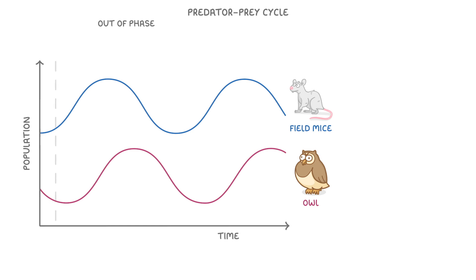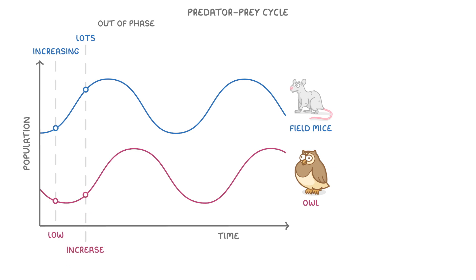At the beginning of our graph, we can see that the owl population is low and the mouse population is increasing. Which kind of makes sense, because if there aren't many predators around, then the prey population is free to increase, because they're not really being eaten very much. However, in this next section we can see that there are now loads of mice, which means that there is lots of food for the owls, and so the predator population starts to increase again.